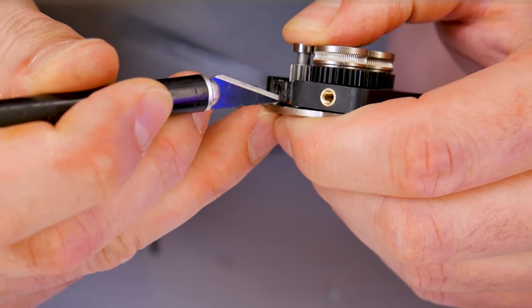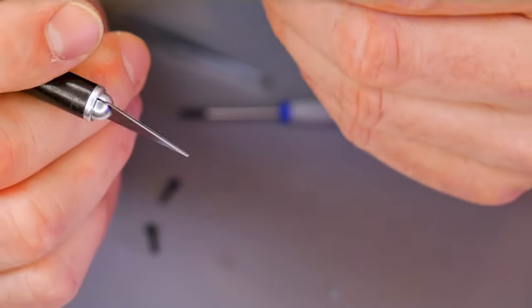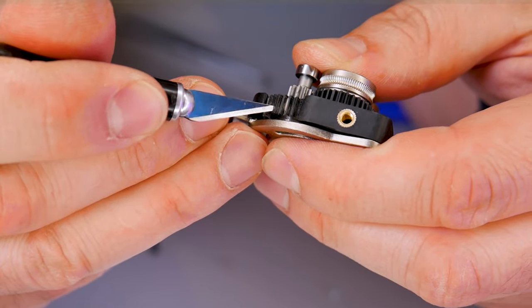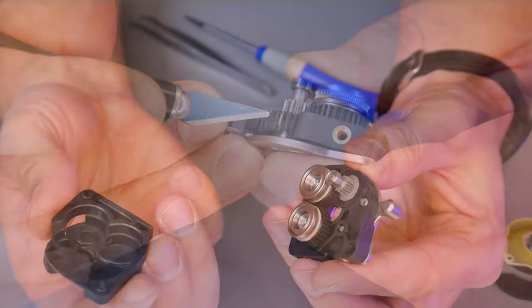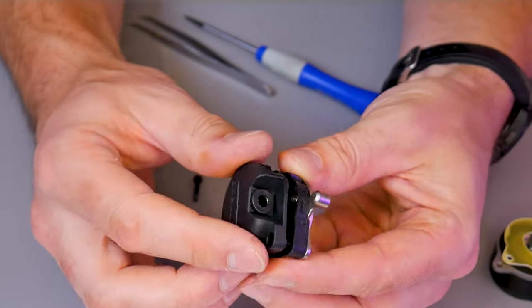Since I had everything already apart, I thought it would be a good idea to do a thorough inspection and check all of the gear teeth and use a hobby knife to remove any remaining debris. When I was finished, we can install everything back in the reverse order of disassembly.